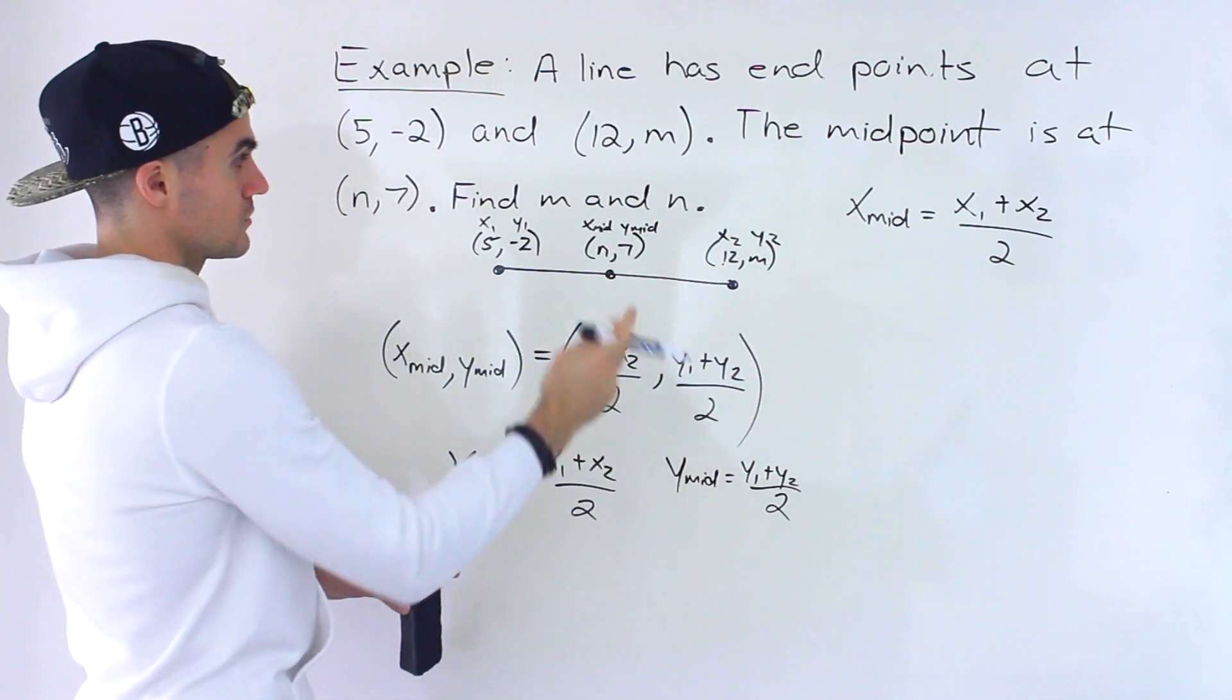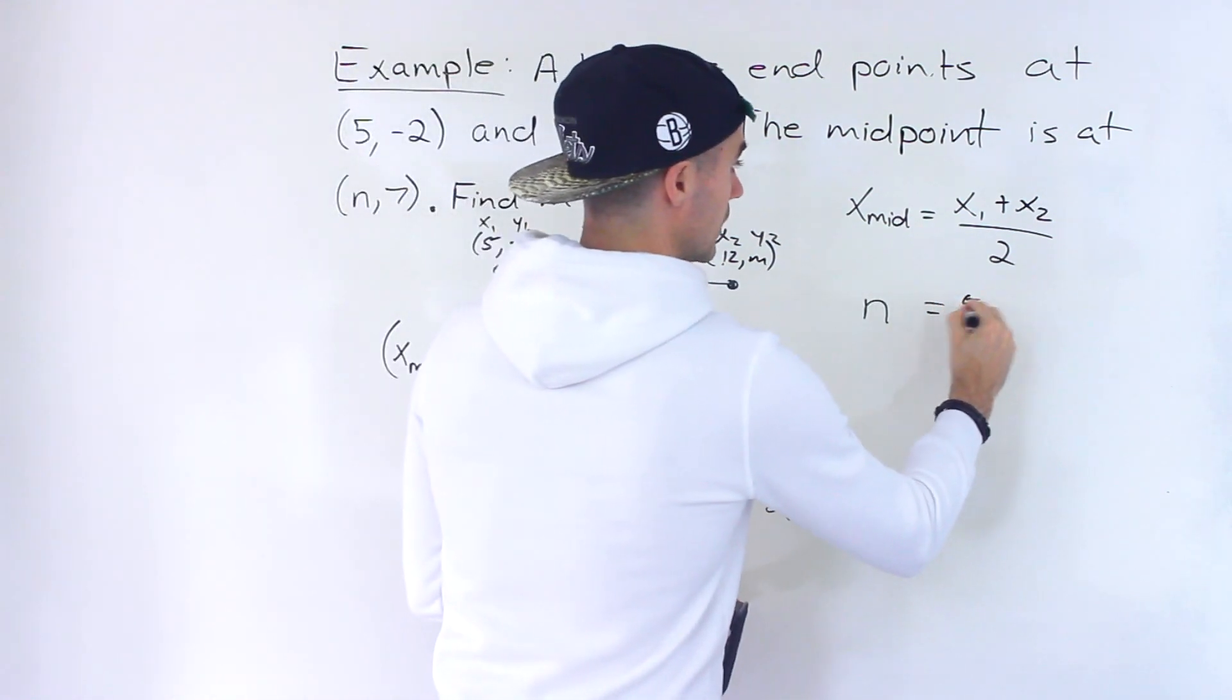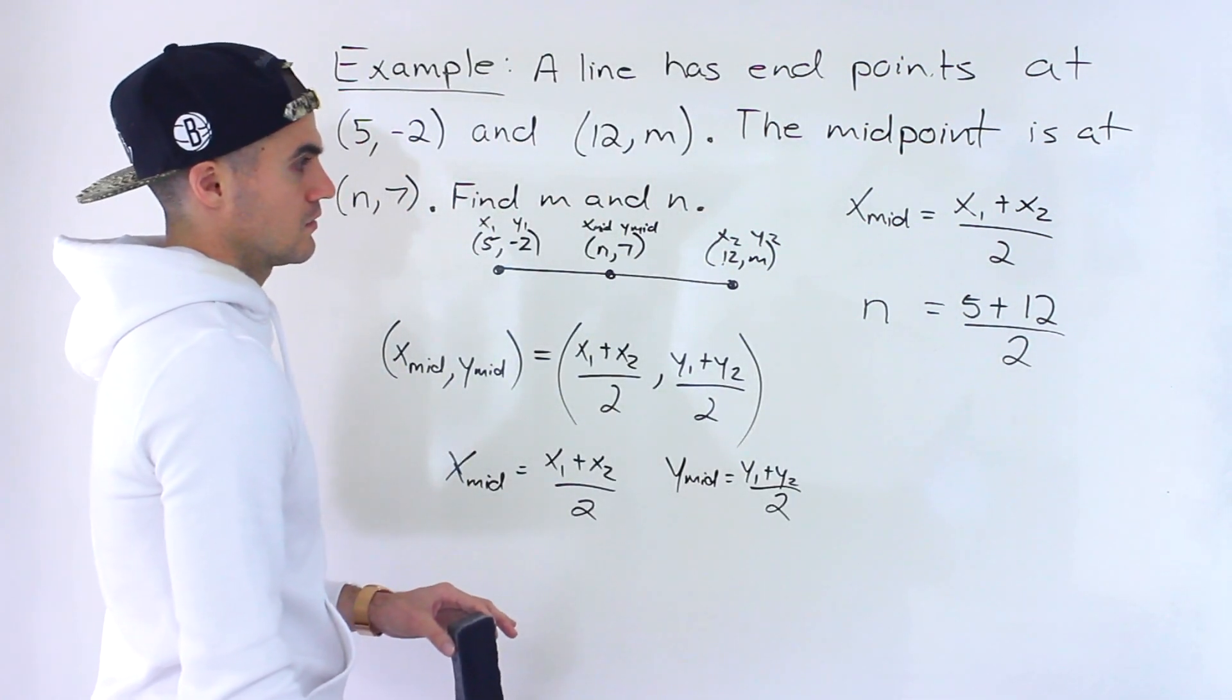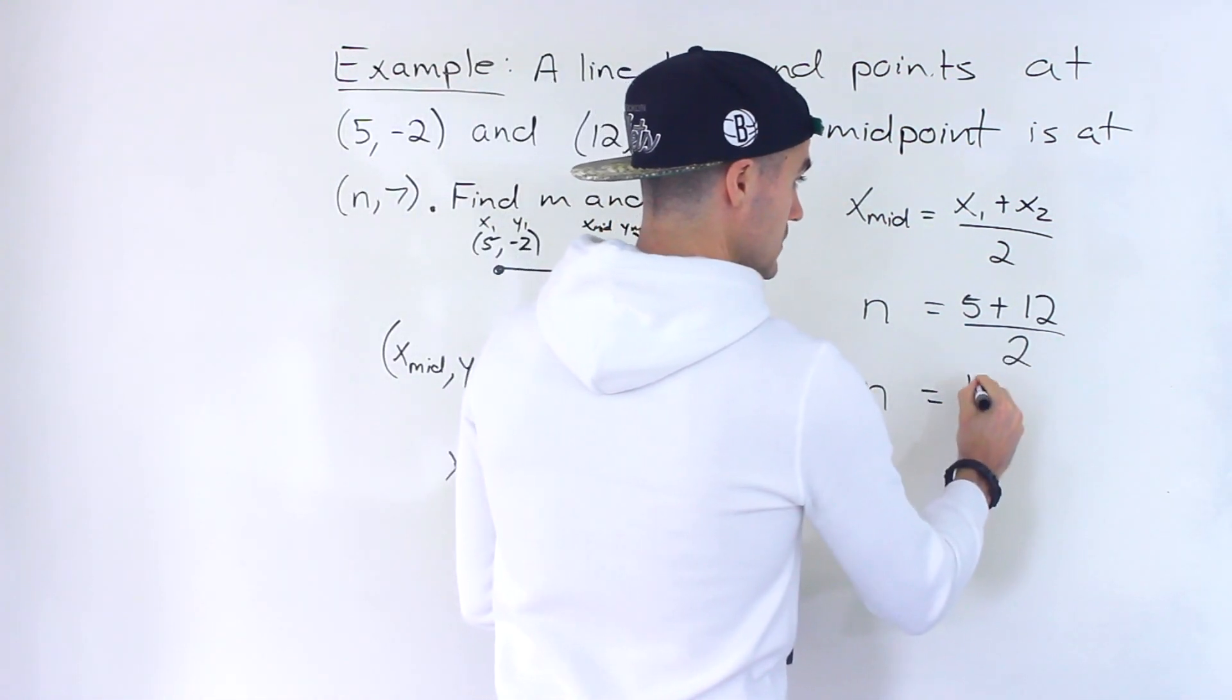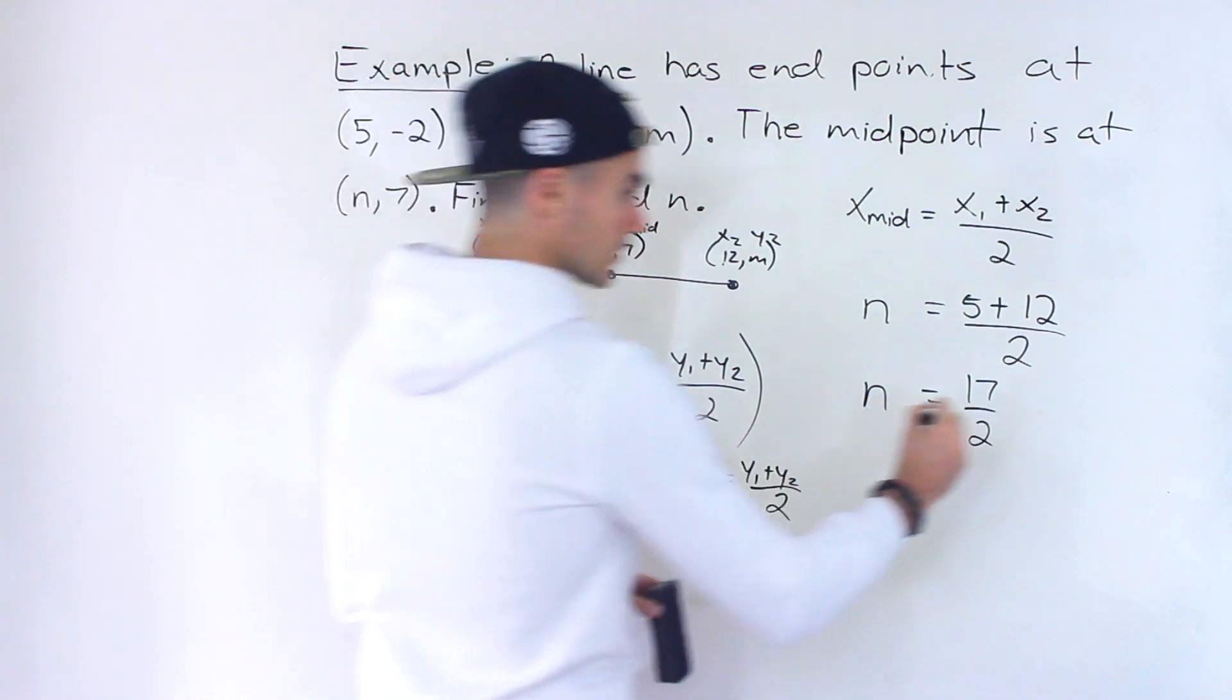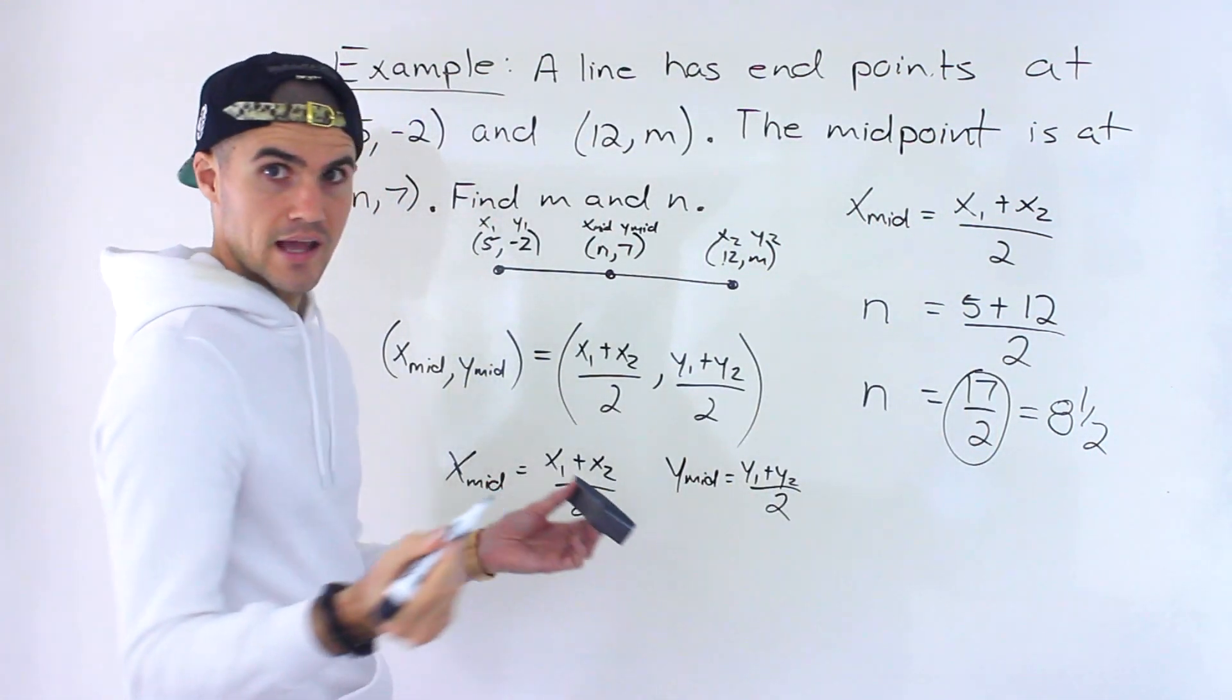Well, let's just sub everything in. So the x value of the midpoint is n. Okay, then we have x1, which is 5, plus x2, which is 12, and then we're dividing by 2. Right, so we could solve for that n value. So here, we would end up with 17 over 2. And then 17 over 2 doesn't simplify any further. If you want to write it as a mixed fraction, it would be 8 and a half. I'm going to keep it in that format though. So that's the n value right there.